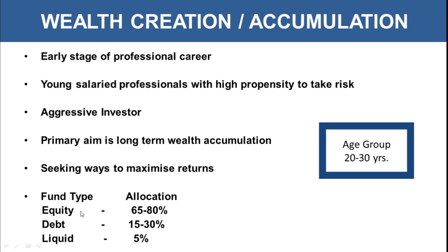Equity can be invested through mutual funds or directly in the share market, and about 15 to 30 percent of your investable surplus should be in debt. The maximum allocation is in equity at this stage because equities have higher risk and thus can provide higher returns. Debt funds are a little conservative and provide somewhere around 8 to 10 percent returns, so a smaller allocation should be in debt and the larger portion in equity.